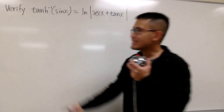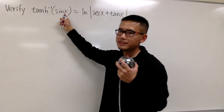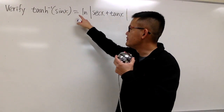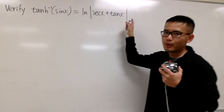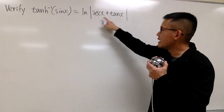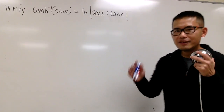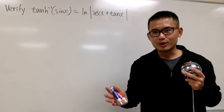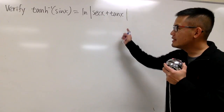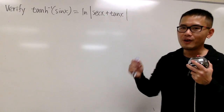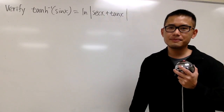I'm going to show you that the inverse hyperbolic tangent of sin x is in fact the same as ln of the absolute value of secant x plus tangent x. For those of you in Calc 2, you know that these two are the possible results from the integral of secant x.